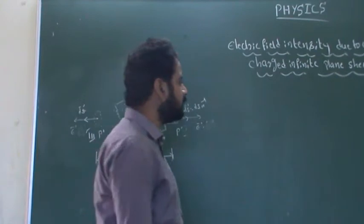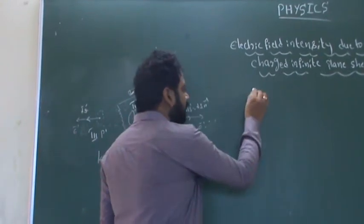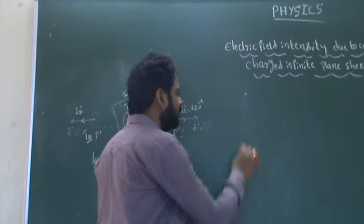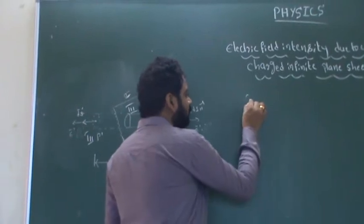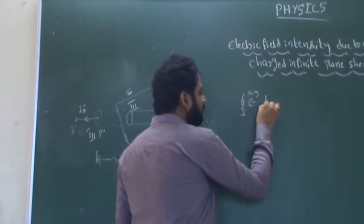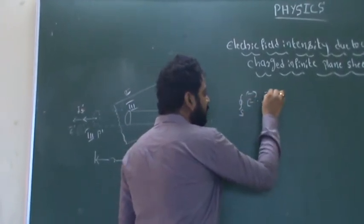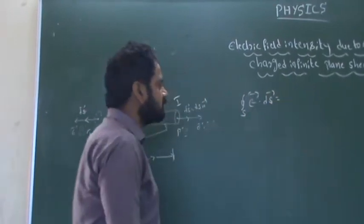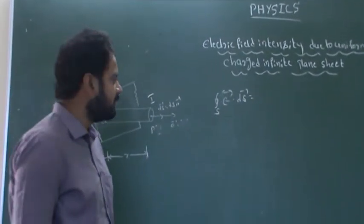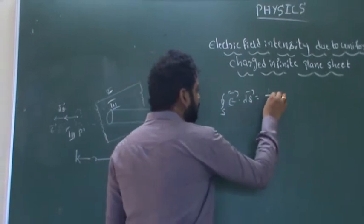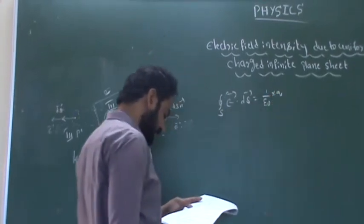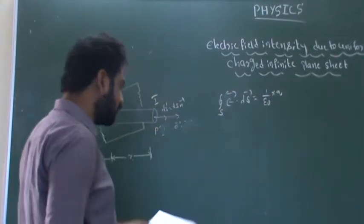According to Gauss's theorem, the surface integral of vector E dot dS is equal to 1 by epsilon naught into q.